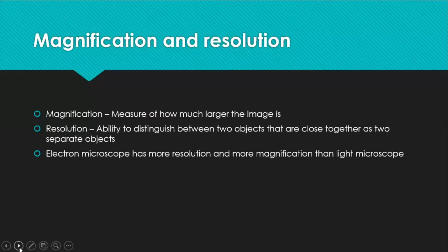Magnification is the measure of how much larger the image is, or the ratio between the length of the drawn image and the length of the actual image. Resolution is the ability to distinguish between two objects that are close together as separate objects. For example, a ribosome is partitioned into two small dots, but in a low-resolution microscope you see it as a single dot. In a high-resolution microscope, like an electron microscope, you can differentiate between the two dots. Electron microscopes have more resolution and more magnification than light microscopes.